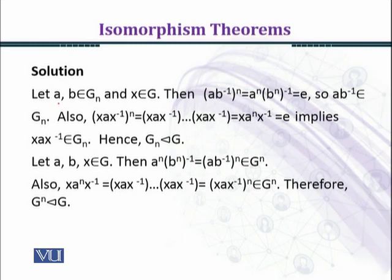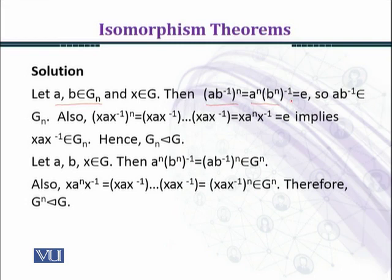Now we provide the solution. Let a, b belong to G_n and x belong to G. Then (ab^{-1})^n = a^n · (b^{-1})^n = a^n · (b^n)^{-1}. Since a and b both belong to G_n, we have a^n = e and b^n = e by definition of G_n.